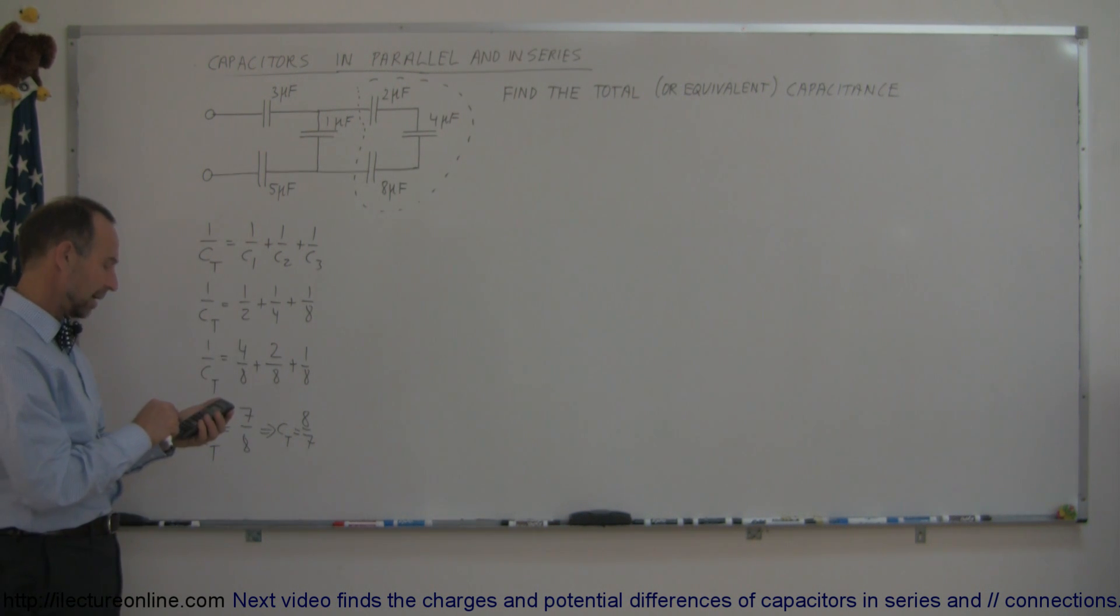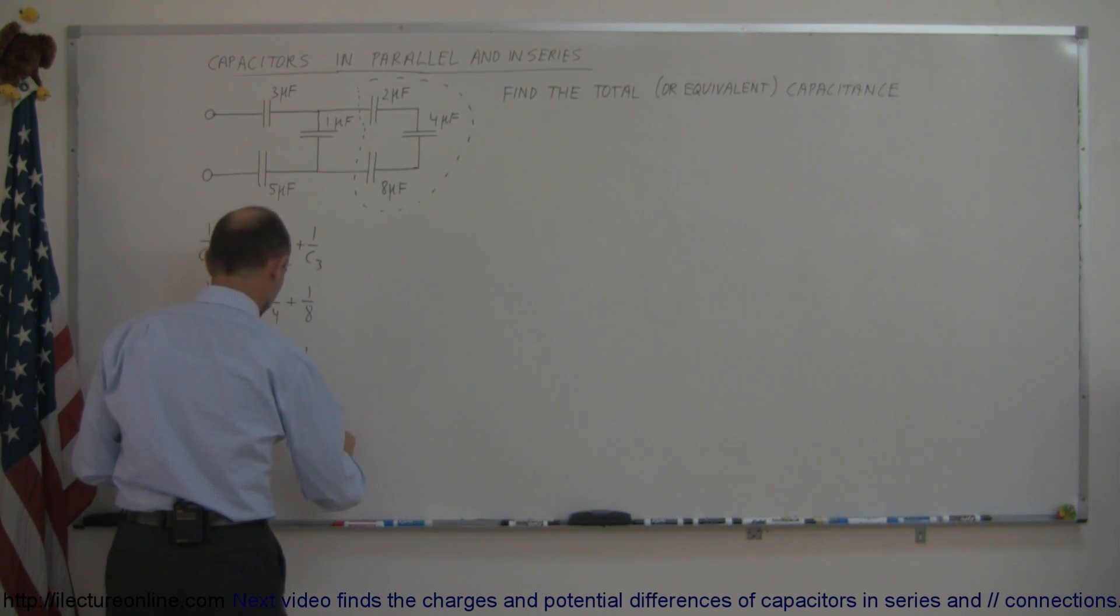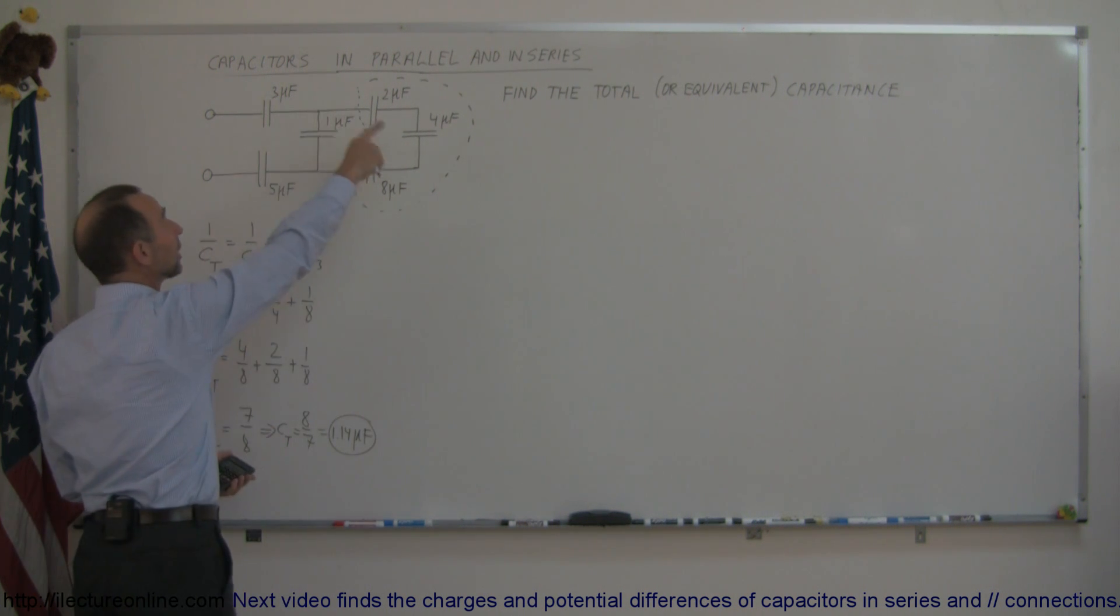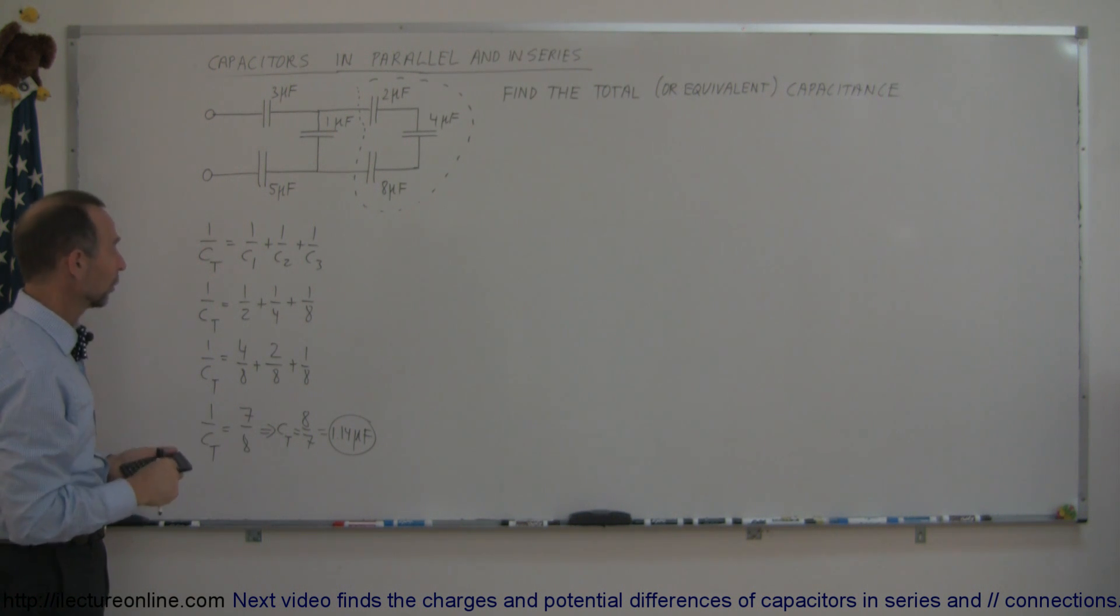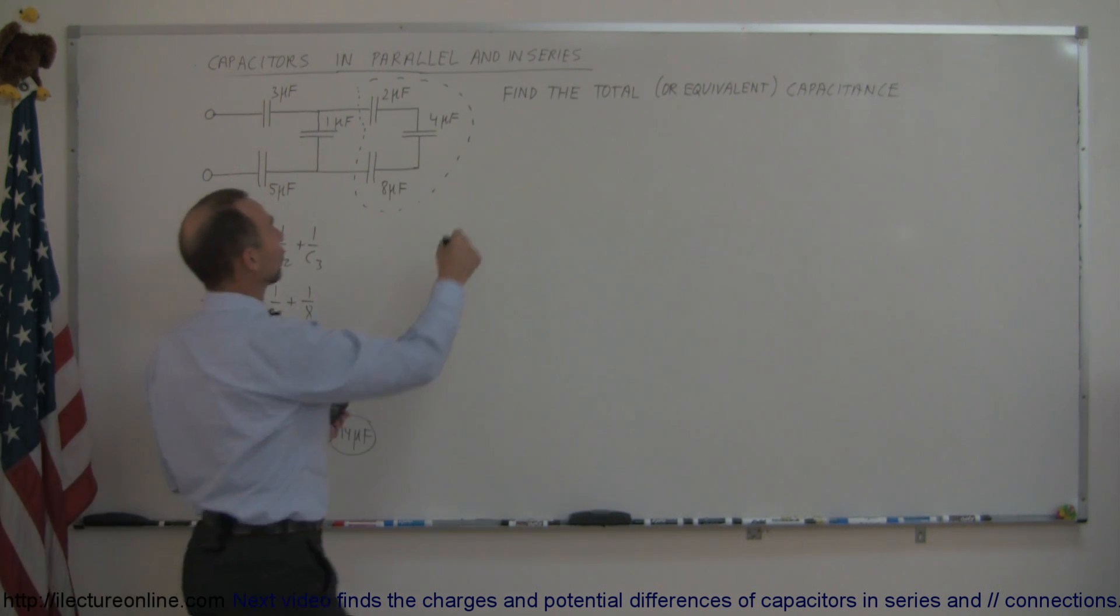If we grab a calculator, eight divided by seven equals 1.14 microfarads. This means those three capacitors at the end can be replaced by a single capacitor equal to 1.14 microfarads. Let's redraw the circuit.